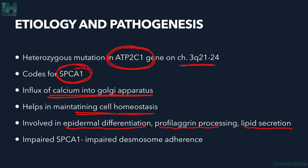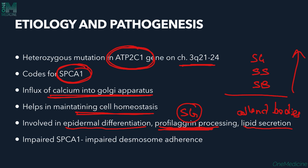Keratinocytes in the epidermis undergo differentiation, proliferation, and desquamation, all of which help maintain epidermal homeostasis — and calcium gradient is very much required for that process. Filaggrin and keratohyalin granules are present in the stratum granulosum, along with Odland bodies. The skin layers from bottom to top are: stratum basale, stratum spinosum, stratum granulosum, and stratum corneum. In palms and soles, there is also an intermediate layer called stratum lucidum.